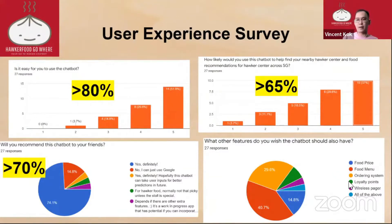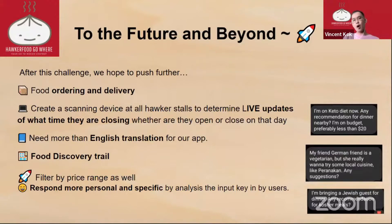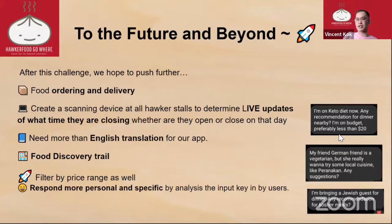Some additional features users liked include food ordering, menu and prices, and loyalty points. Our future plans include food ordering and delivery, creating a scanning device for live updates, English translation, a food discovery trail, filtering by price range, and making the chatbot respond more personally by analyzing user input — for example, 'I'm on a keto diet, any dinner recommendations nearby with a budget under $20?' That requires a lot more intelligence, which we don't have incorporated yet.